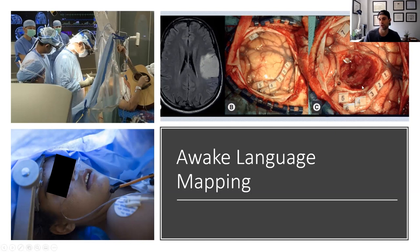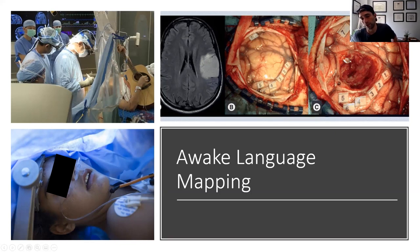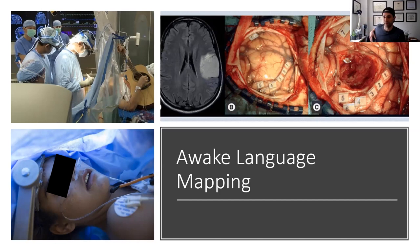You're then able to get an incredible resection where you preserve the language area. It's a combination of an anatomic resection and a functional resection. The MRI may not look perfect, but if someone can't speak after surgery, you've done them an extreme disservice.